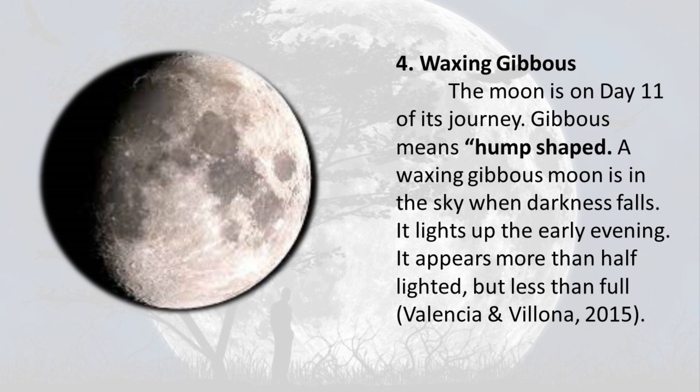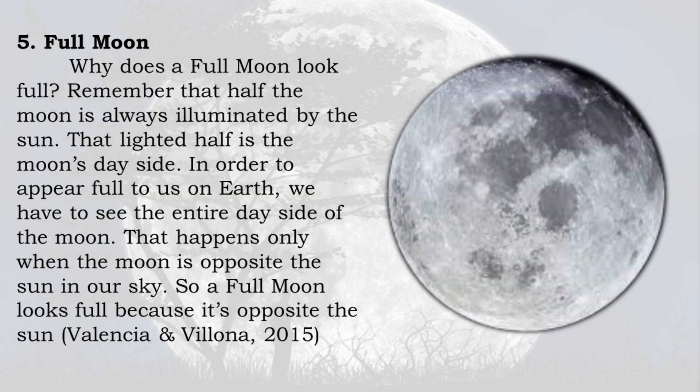Phase 4 — Waxing Gibbous: The moon is on day 11 of its journey. Gibbous means hump-shaped. A waxing gibbous moon is in the sky when darkness falls and lights up the early evening. It appears more than half lighted but less than full.